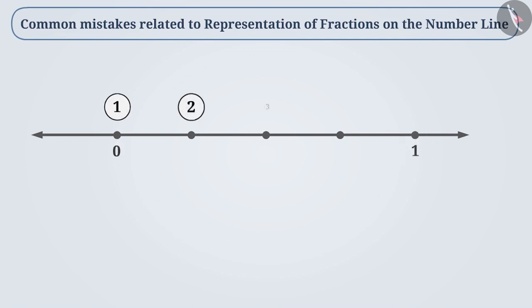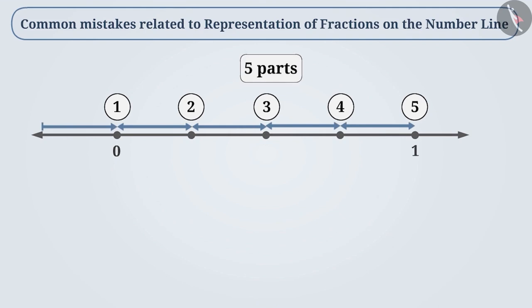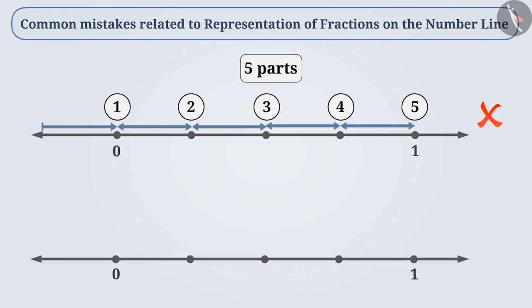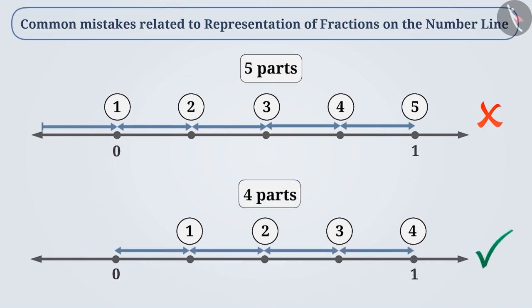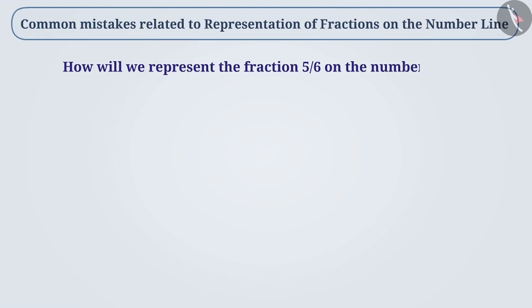Look at this example. It is understood that it is divided into 5 parts by counting from 0 to 1. The correct understanding is that to find the number of parts, skip the point at 0 and start counting from the point next to 0, counting up to 1. With this understanding, there are 4 parts here. As a result of counting from 0, many times there is also a mistake in expressing fractions.